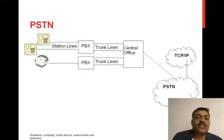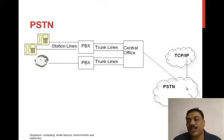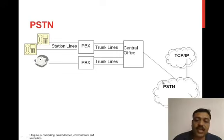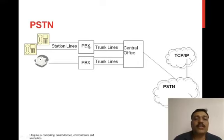In the PSTN architecture, you have telephone lines connected to stations, a number of PBX units connected via trunk lines to a central office, and then the PSTN network. The service provider or main branch exchange connects to different PBX units. The connection between your telephone and the nearest branch exchange is called a local loop.